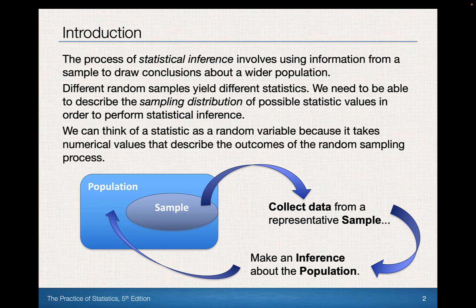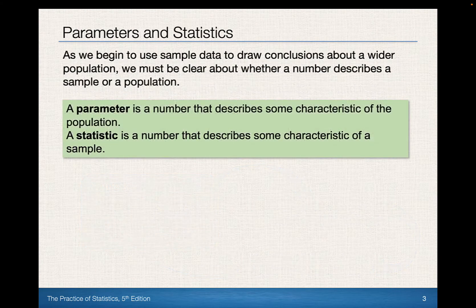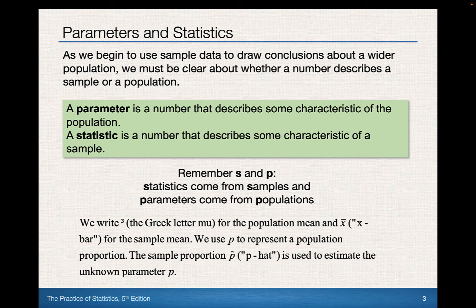We know that randomness is a factor, and we learned in the previous chapter that the 10% condition matters — in statistics more is better, but too much is a bad thing. The reason for that is because we need to satisfy this idea of independence for us to believe that our model could eventually be a normal distribution. But what distribution are we actually trying to determine to be normal?